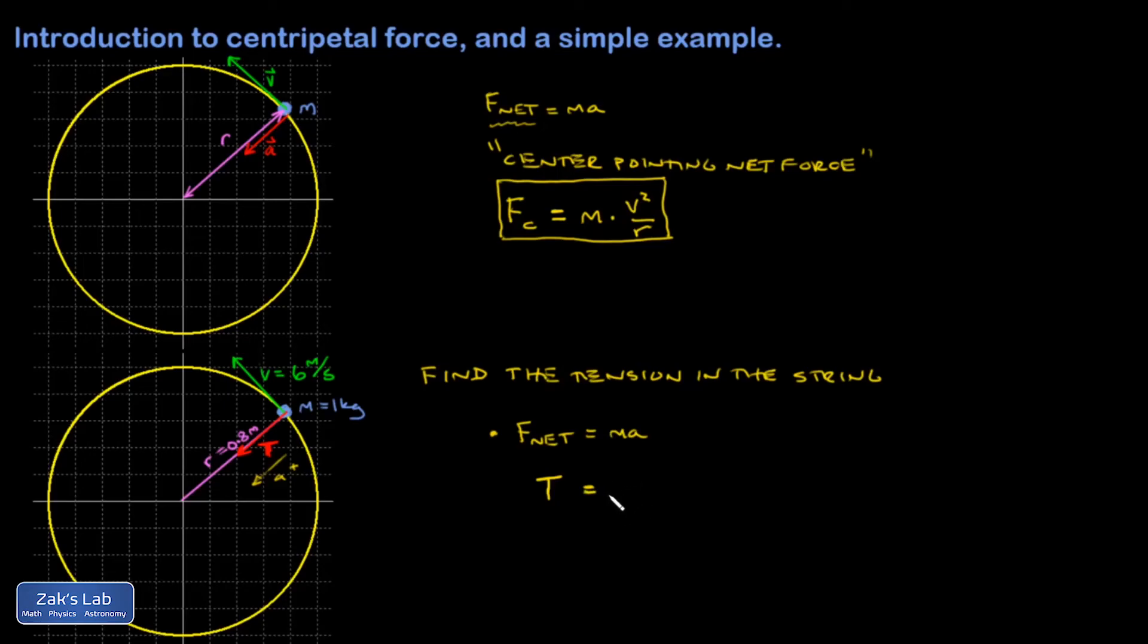And then my mass, I'll just leave as m for now. And then my acceleration must be v squared over r in order to bend the path of this thing into a circular trajectory.